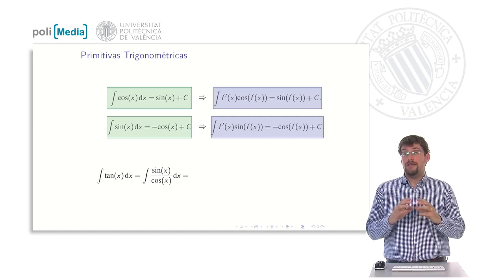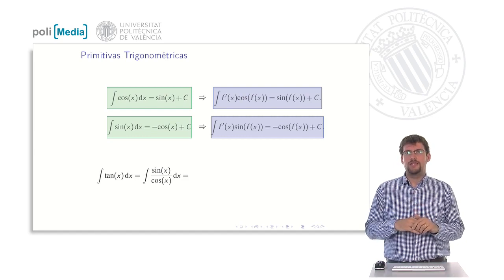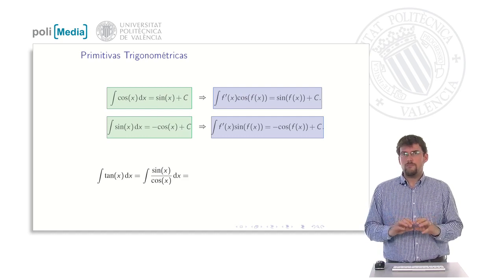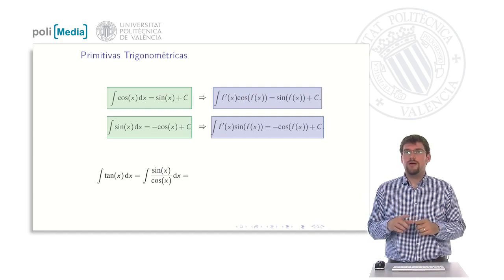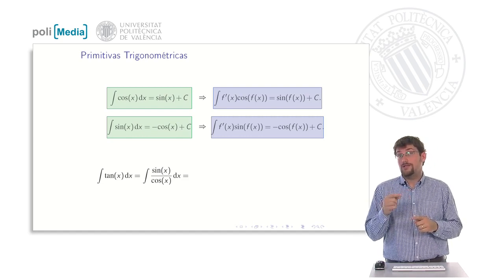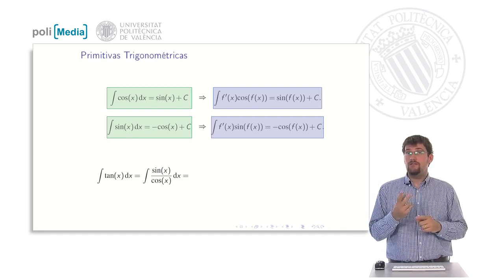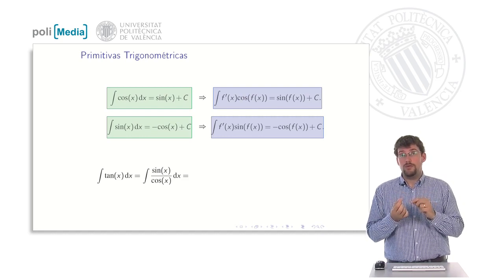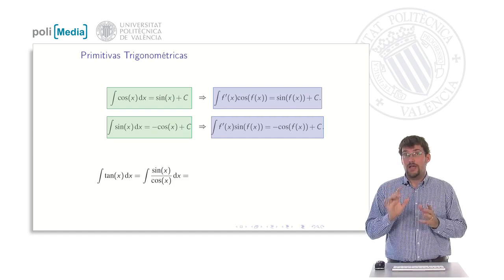When we break down this integral into its components, we notice that the denominator, represented by the cosine, can be designated as a specific function. Let's call it f. Now, what would be the derivative of this function? Well, the derivative of cosine is negative sine. What I have above is exactly the sine. In other words, I have the derivative almost multiplying, and the only thing missing for it to be multiplying is just a minus. Therefore, I multiply by minus 1, then I divide by minus 1, and I would already have the minus above, exactly the way I want it.